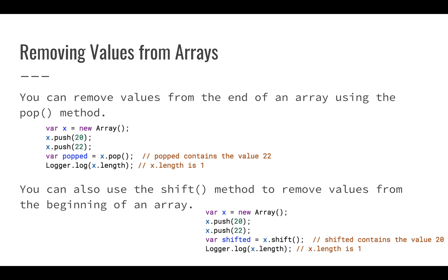We can remove values from arrays. So you can remove them from the end of the array using the pop method. So in this first example, var x equals new Array, I'm going to push 20, I'm going to push 22. Then if I pop, it actually removes that value. So that value popped is going to have the value 22. It's that last thing in the array. And then if I were to look at what my length is, I would see that it is one.